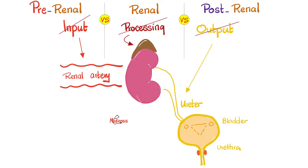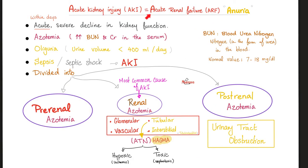Pre-renal azotemia means the kidney is not receiving enough blood or oxygen. Intrarenal means the kidney itself is damaged — hypoxic or toxic. Post-renal is usually caused by an obstruction of the outflow. AKI may present with oliguria (less than 400–500 mL/day) or even anuria, but some patients maintain normal urine volume while waste products still accumulate.